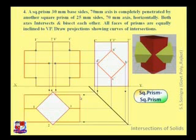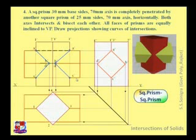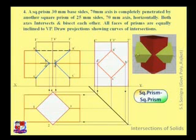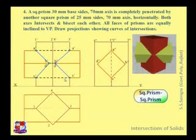Both are square prisms and there is no curve, so join all these points with a straight line because they will be visible. After joining, think about the type of line. The horizontal upper edge of the green prism is inside the red prism, so it appears as a dotted line. Similarly, the bottom one and the middle one are also dotted lines because they are hidden portions.